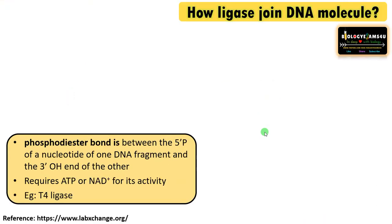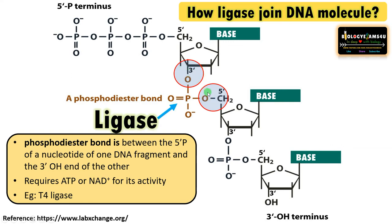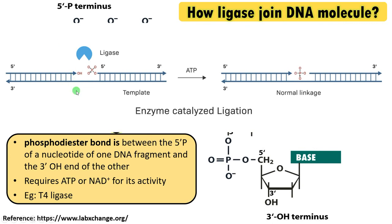A phosphodiester bond is formed between the 5' phosphate of one nucleotide fragment and the 3' OH of another fragment. This two-ester bond, called a phosphodiester bond, is formed by the enzyme ligase. It requires ATP or NAD+ for its activity — an example is T4 ligase. Where there is a single-stranded nick with a 3' OH and a 5' phosphate, in the presence of ATP the ligase joins them by forming a phosphodiester bond, sealing the nick.